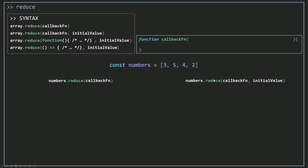The reduce method will call my callback function on each element one by one. The first parameter is the accumulator, which represents the total variable from the for loop example — we can also call it the previous value, since this is where we accumulate all previous values. The second parameter is the current element: on the first iteration it's 3, then 5, then 4, then 2. The third parameter is the index (0, 1, 2, 3) and the fourth is the array itself.